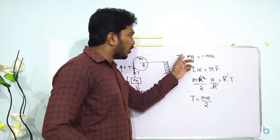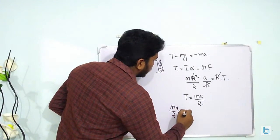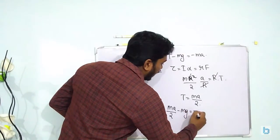We are going to substitute this relation over here. So you will be getting MA by 2 minus M G equal to minus MA.